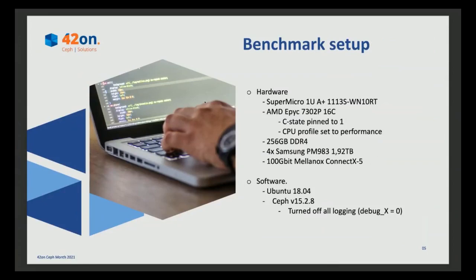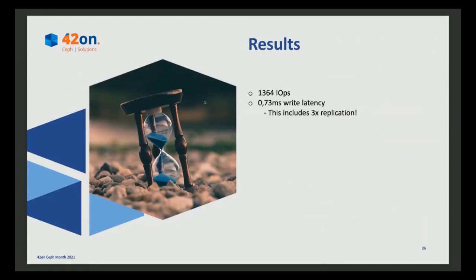Software-wise: Ubuntu 18.04, Ceph version 15.2.8, and I turned off all the logging — debug_osd equals 1, debug_ms for messaging equals 0, and so on. Turn off all the logging and then we can give it a go. What can we achieve? 1,364 IOPS, which is a write latency of 0.73 milliseconds for a 4K block being written to three nodes at the same time. This includes all the replication — the block we just wrote has been written to three different NVMes in different nodes within one millisecond. That's a fairly good performance given that Ceph replicates over the network and is a distributed system that can scale out.